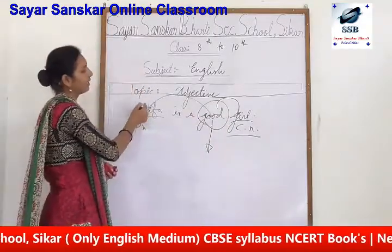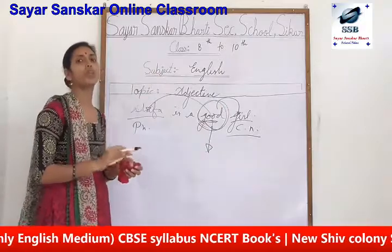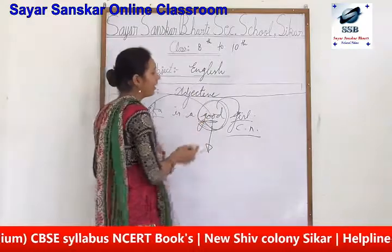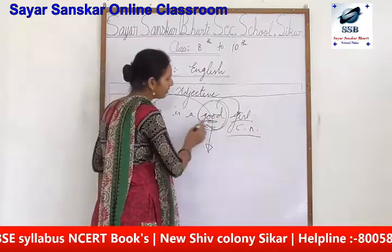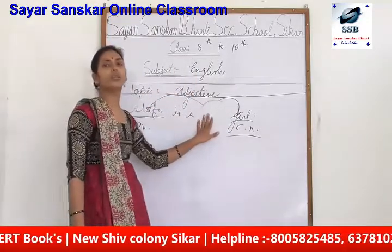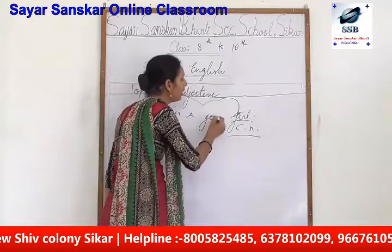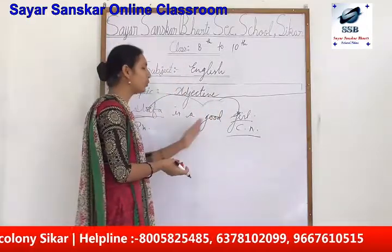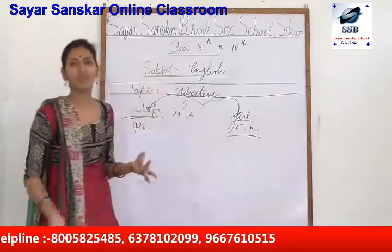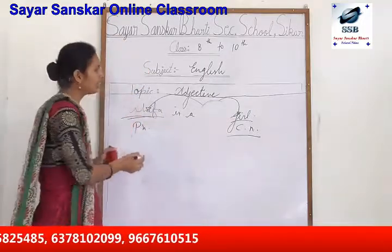We are talking about the good girl. Adjective means to add something. Shifa is a girl — if we use just this sentence, it is not incomplete. But to add something to that, we have just added the word 'good'. We can add anything — good girl, nice girl, beautiful girl, whatever we want. Even if we want to add something negative, we can say bad girl also, but we must not. Those are the kinds of examples you are supposed to do.